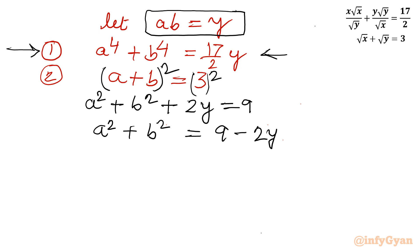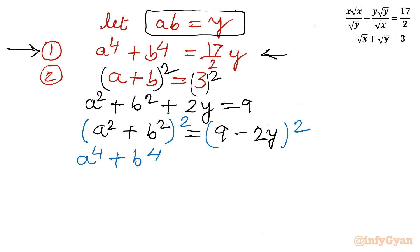Now equation 1 involves a⁴ + b⁴, so let us square the expression a² + b² = 9 − 2y once again. Squaring gives a⁴ + b⁴ + 2a²b², which equals 2y² on the right side added to (9 − 2y)². So we get a⁴ + b⁴ + 2y² = 81 − 36y + 4y².